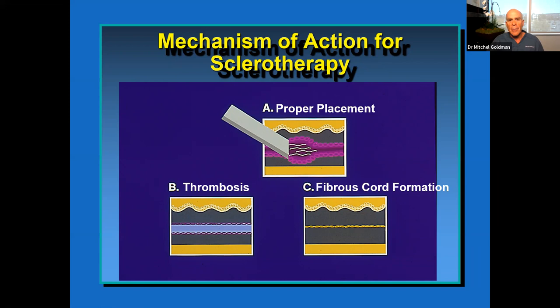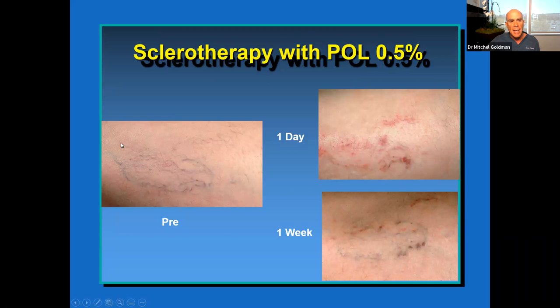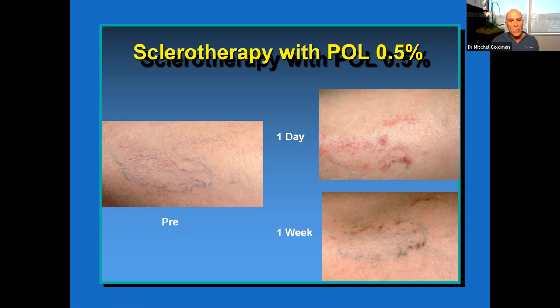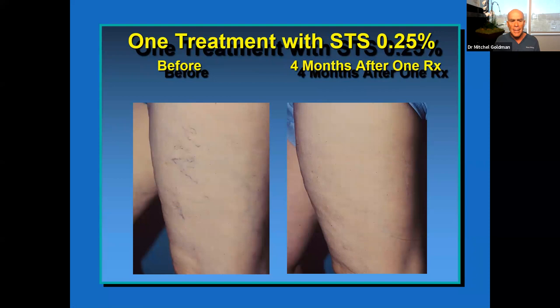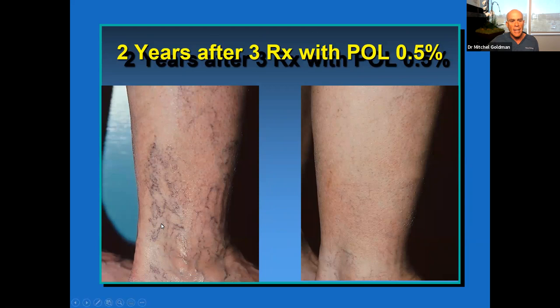Sclerotherapy comes from the Greek word 'sclero,' meaning hardening. We literally inject a medicine into the vein, which causes it to clot up and become a fibrous cord. These are the veins before treatment. One day later the veins become inflamed — we're not vaporizing or stripping the veins, we're irritating them so the body resorbs and eliminates them. It takes at least one to two months after the procedure for the veins to fully go away.